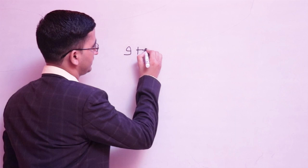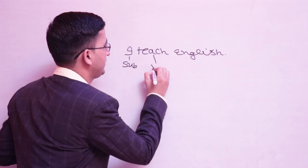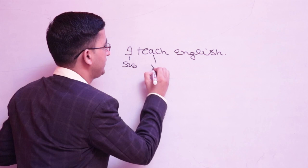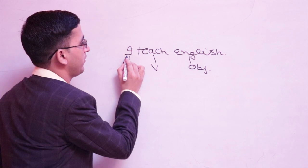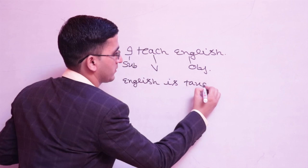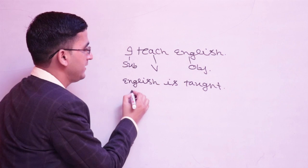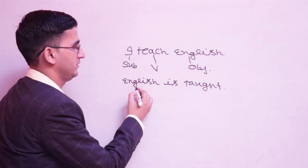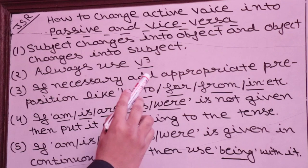Voice is the form of a verb that shows whether the subject of a sentence performs the action or is affected by it. For example: 'I teach English.' Here, I is the subject, teach is the verb, and English is the object. I am performing the action. In passive: 'English is taught' — here English is affected. The action is performed by someone else.